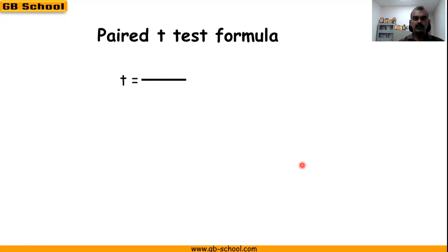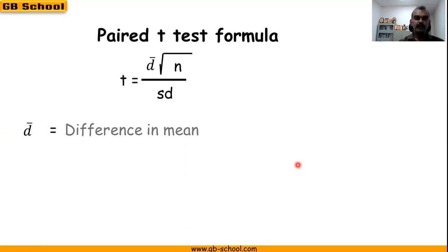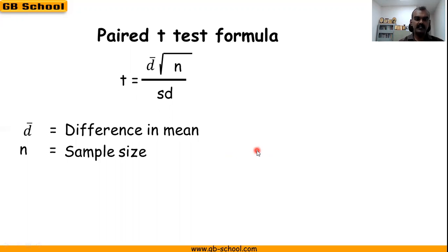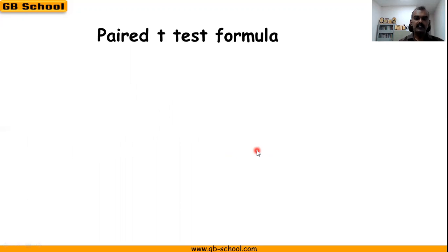t is equal to d bar into square root of n divided by sd. It is nothing but standard deviation of difference. d bar is nothing but mean of difference, that is x1 minus x2, and n is sample size. sd is nothing but standard deviation of difference.